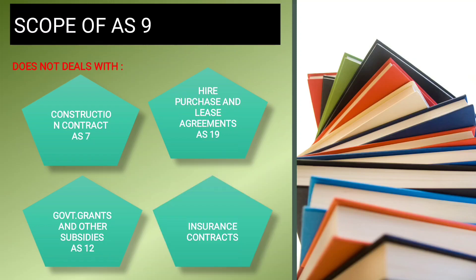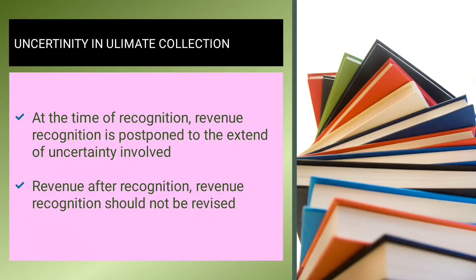Government grants and other subsidies are dealt with under AS12 and are excluded from AS9. Insurance contracts are also excluded from AS9. So the four items excluded from the scope of AS9 are: construction contracts, hire purchase and lease agreements, government grants and subsidies, and insurance contracts.